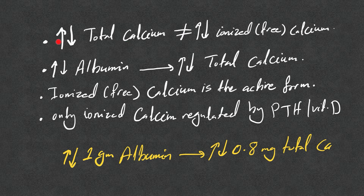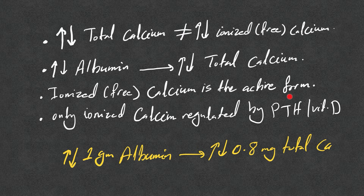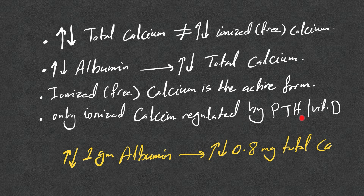Total calcium cannot tell you about the value of ionized calcium. Any increase or decrease in albumin will lead to increase or decrease in total calcium, since 40 to 45% of calcium is bound to albumin. Ionized free calcium is the active form — the form that actually works in the body — and only ionized calcium is regulated by PTH and vitamin D, not total calcium.